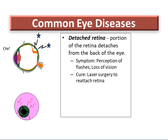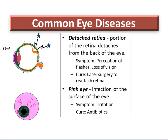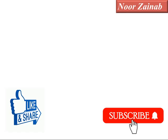Detached retina occurs when a portion of the retina detaches from the back of the eye. Symptoms include perception of flashes or loss of vision, and the cure is laser surgery to reattach the retina. Pink eye is an infection of the surface of the eye, with symptoms including irritation, and it is treated with antibiotics.